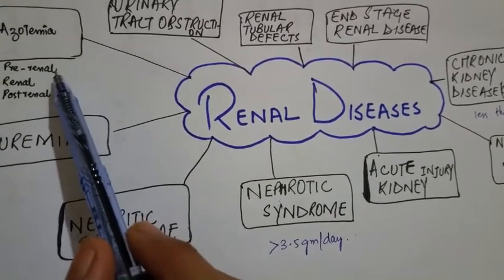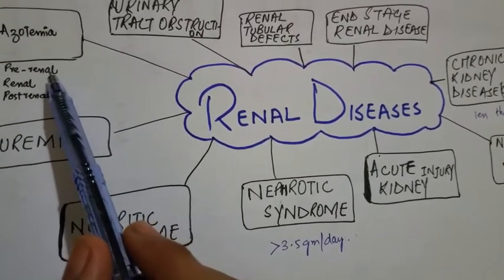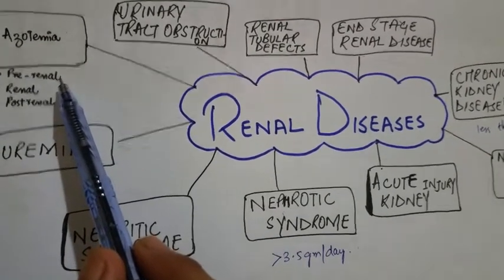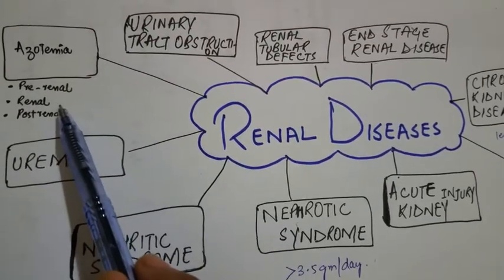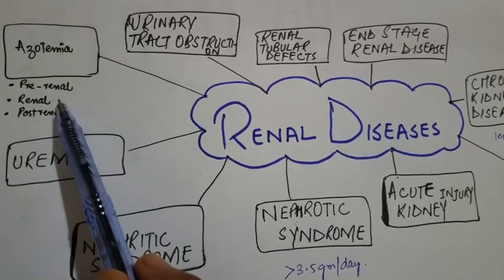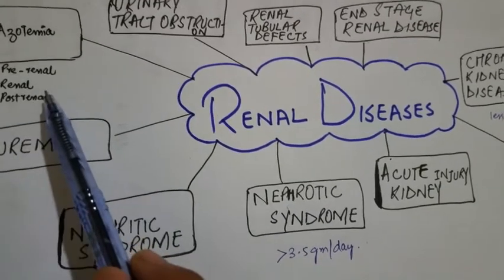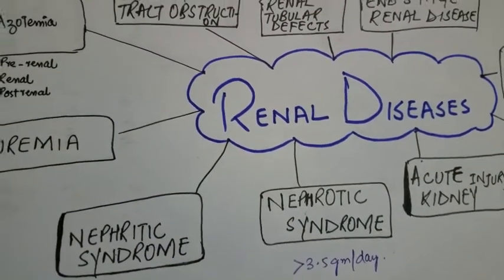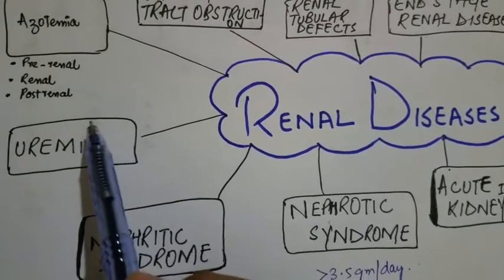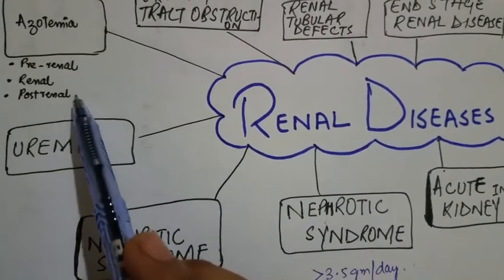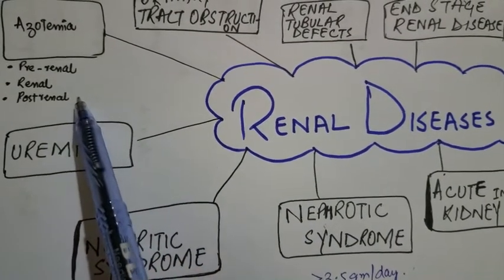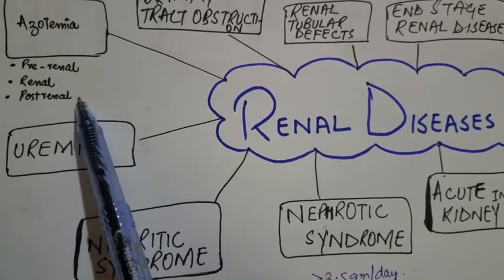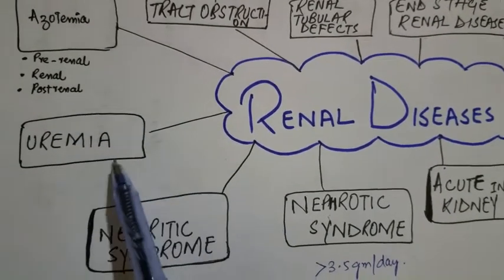The pre-renal causes include hypoperfusion of the kidney, such as cirrhosis of the liver, congestive heart failure, shock, and volume depletion. Renal azotemia occurs when there is damage to the renal parenchyma. Post-renal azotemia occurs when there is obstruction to the urinary outflow.